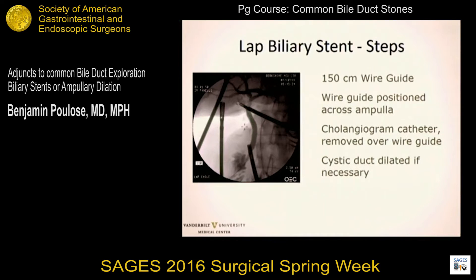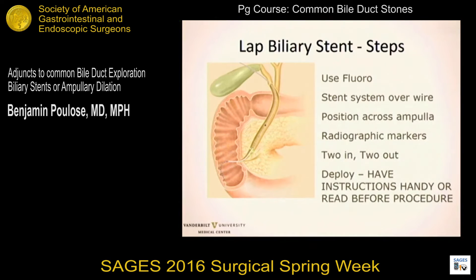When placing an anti-grade stent, I do this trans-cystically. I pass a 150-centimeter wire that comes with the kit—I'd urge you to use the wire that comes with the kit, not another wire, because it passes more easily. The wire is positioned across the ampulla under fluoroscopy. You want to get access to the common bile duct at an advantageous angle. The cholangiogram catheter is then removed over the wire guide, and the cystic duct is dilated if necessary. About 70–80% of the time, I do dilate the cystic duct prior to passing the stent delivery system.